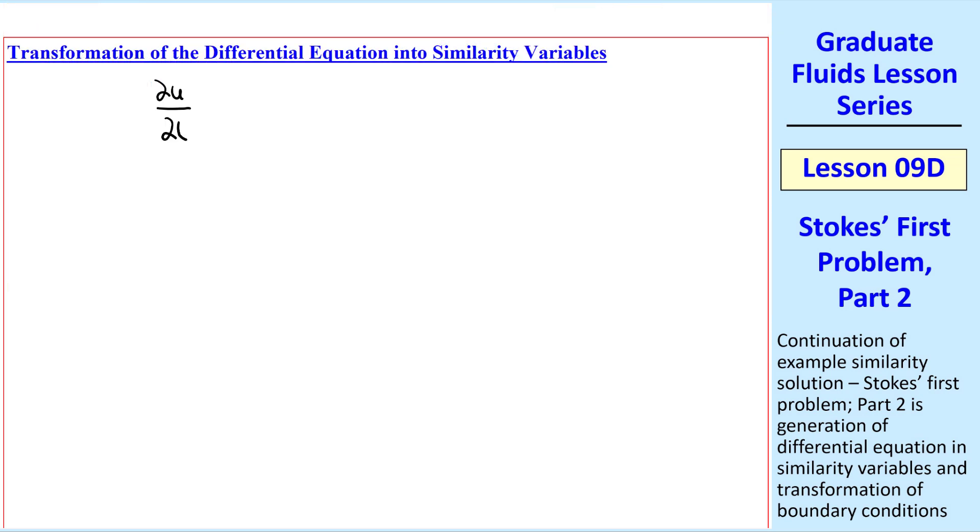Finally, we can transform our original equation in physical variables into similarity variables. We reduce the left-hand side to minus U F'(η) η/δ dδ/dt, and the right side to νU/δ² F''(η).